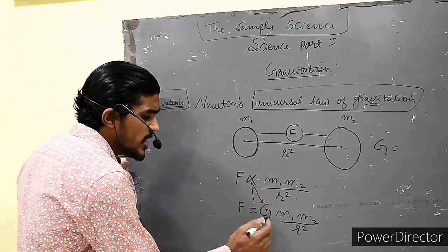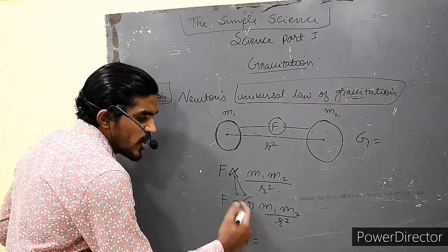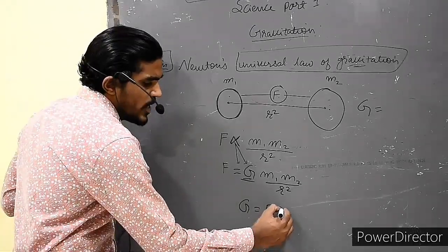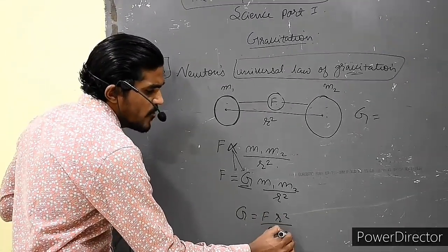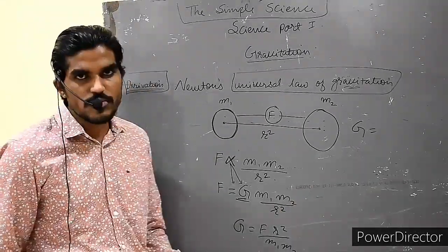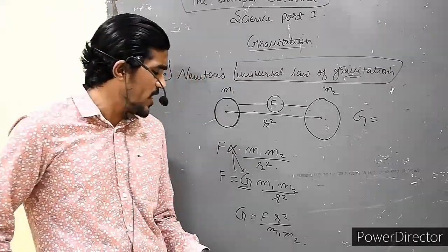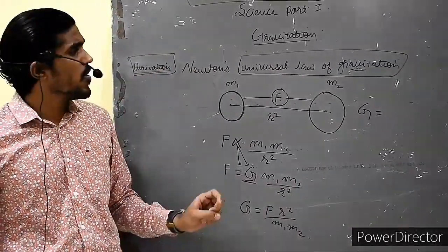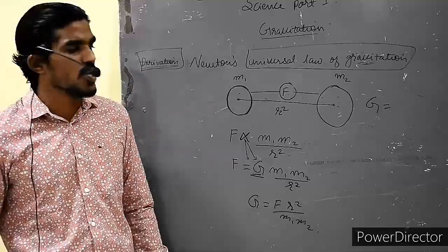Now what will be the value of G? So the value of G becomes, now interchange: G equals F into R square divided by M1 into M2. So this is the derivation for universal gravitational constant.